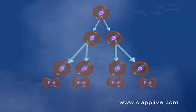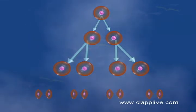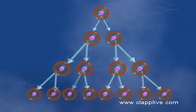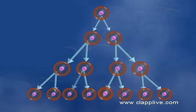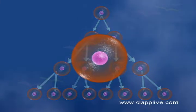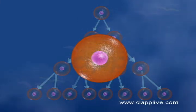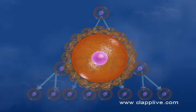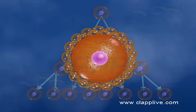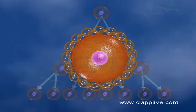Meiosis begins in the primary oocytes soon after their formation, but the division process gets arrested and the oocyte remains in the meiotic prophase I stage. Each primary oocyte then gets surrounded by a layer of granulosa cells which are derived from the germinal epithelium lining the ovary. The structure thus formed is called the primary follicle.